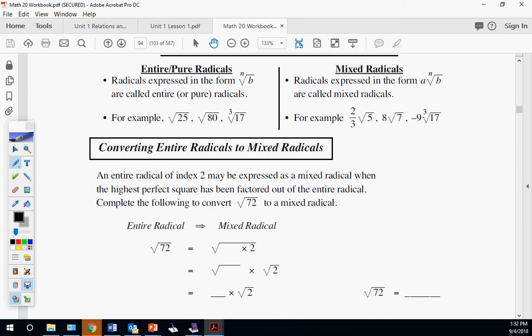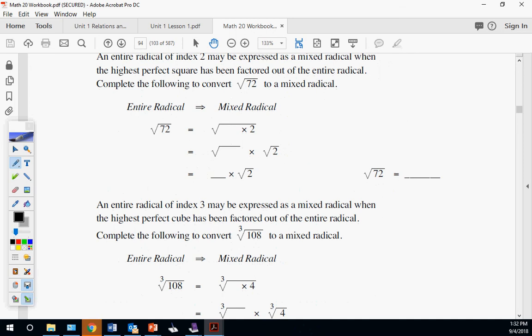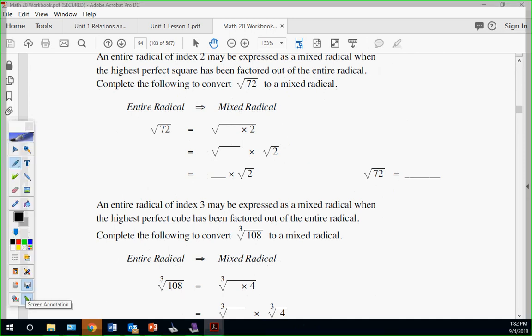Converting entire radicals to mixed radicals means we're simplifying. Let's practice. Root 72, we told you it's 36 earlier. 36 times 2. We know 36 is 6. So root 72 to mixed is 6 root 2.